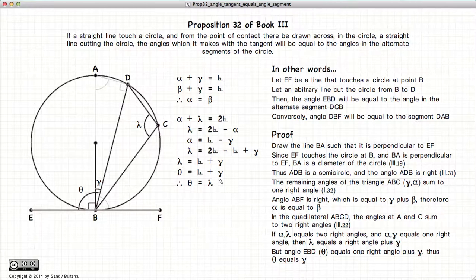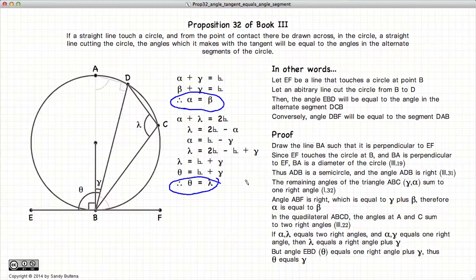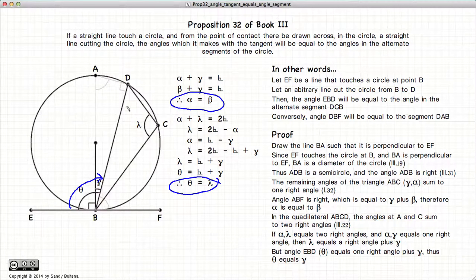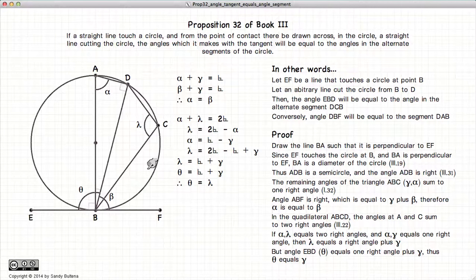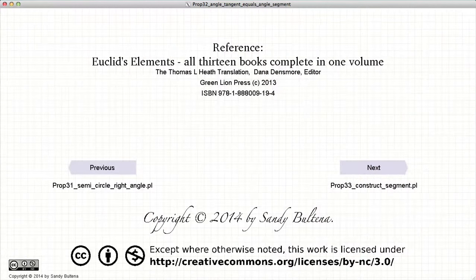So we have shown that theta is equal to lambda, and we have shown that alpha is equal to beta, which is what this proposition was trying to state — that the angle formed here will be equal to the angle inside the corresponding circular segment. And thus we have demonstrated the proposition. That concludes this video presentation. To see the next presentation, just click the next button. Thank you.